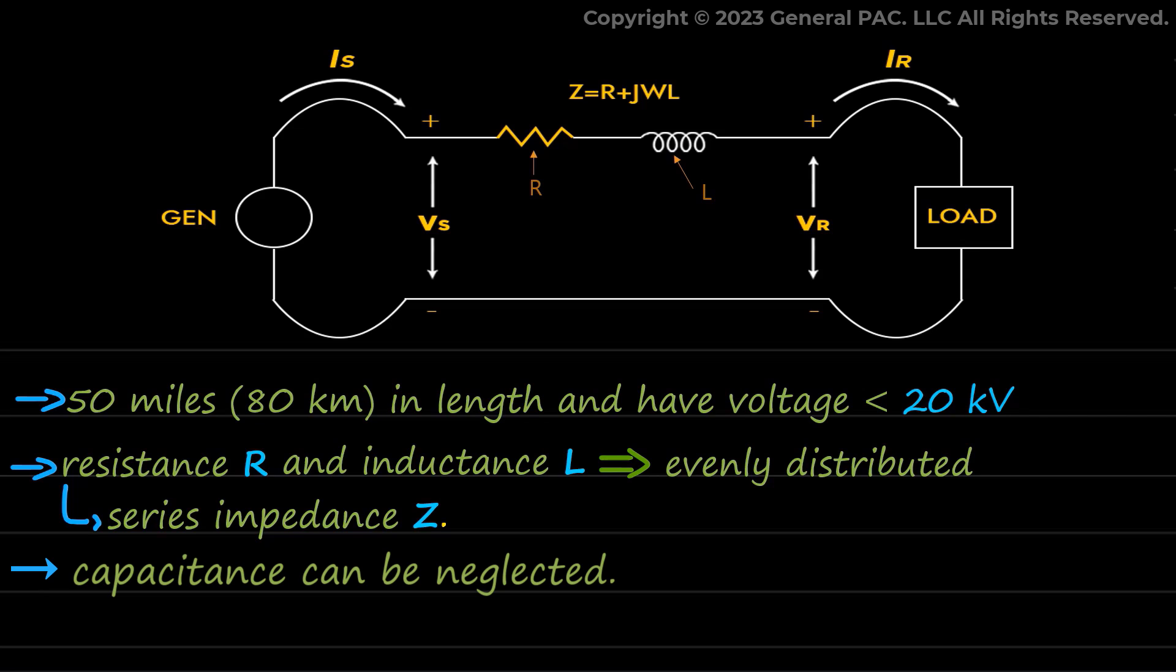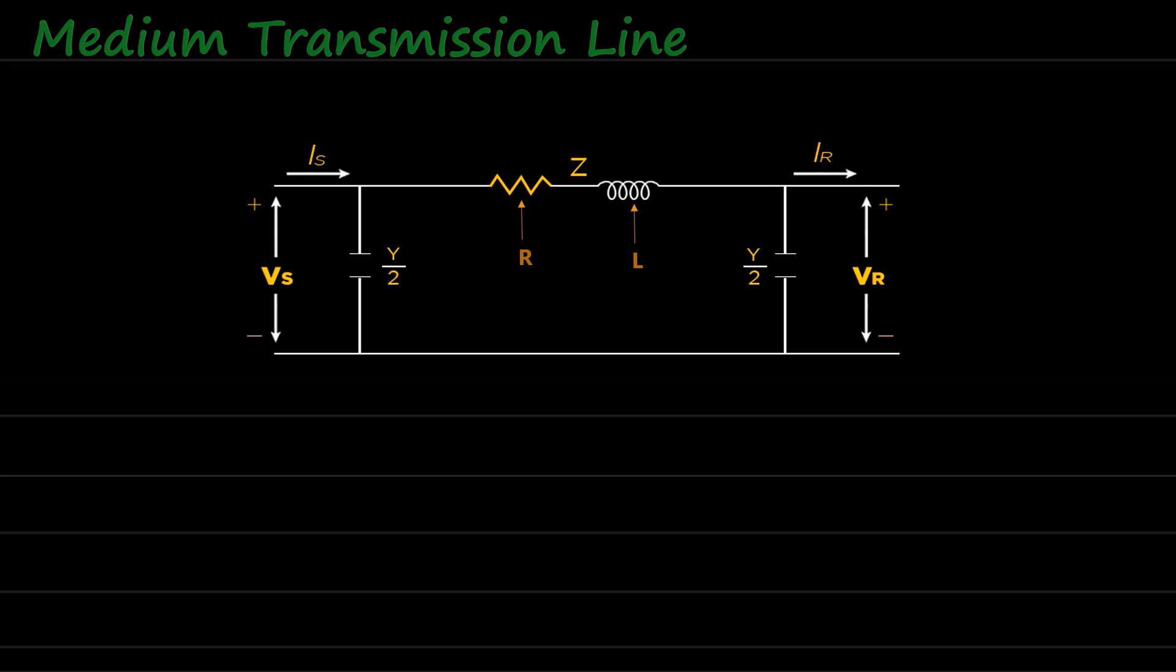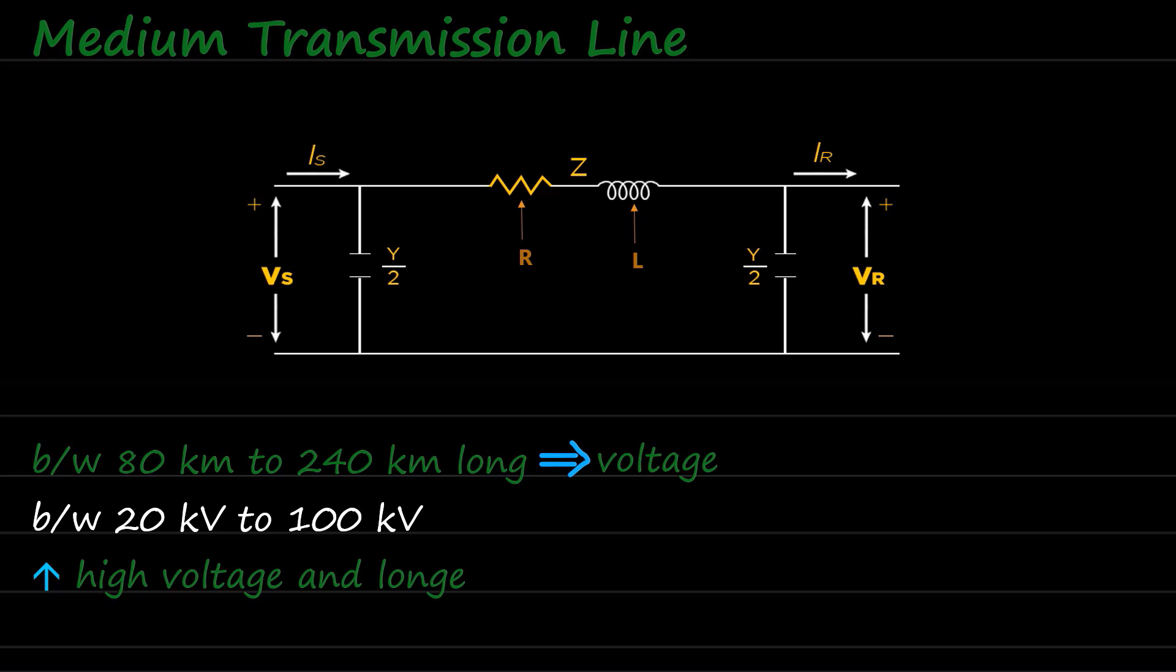Next, we have medium transmission line. Transmission lines which are roughly between 80 kilometers to 240 kilometers long and with voltage between 20 kV to 100 kV are classified as medium transmission line. Due to high voltage and longer length, the effect of shunt capacitance C can no longer be ignored.